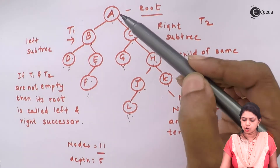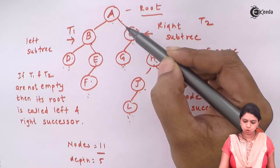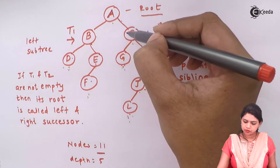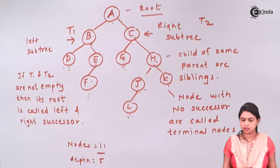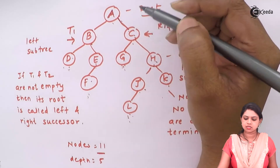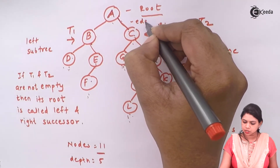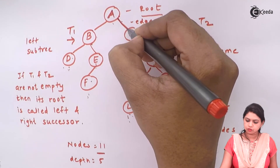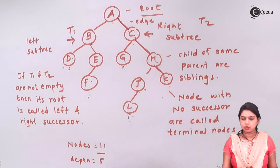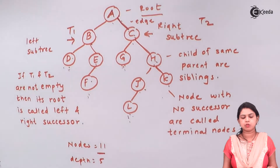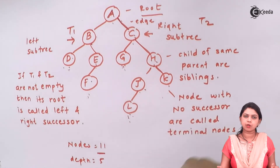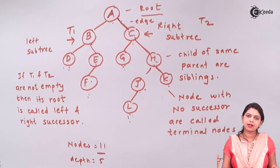The line drawn from a parent to a child is called an edge, and a sequence of these edges is called a path. For example, A is a parent and C is a child, so the line between A and C is called an edge. The sequence of all edges is your path.